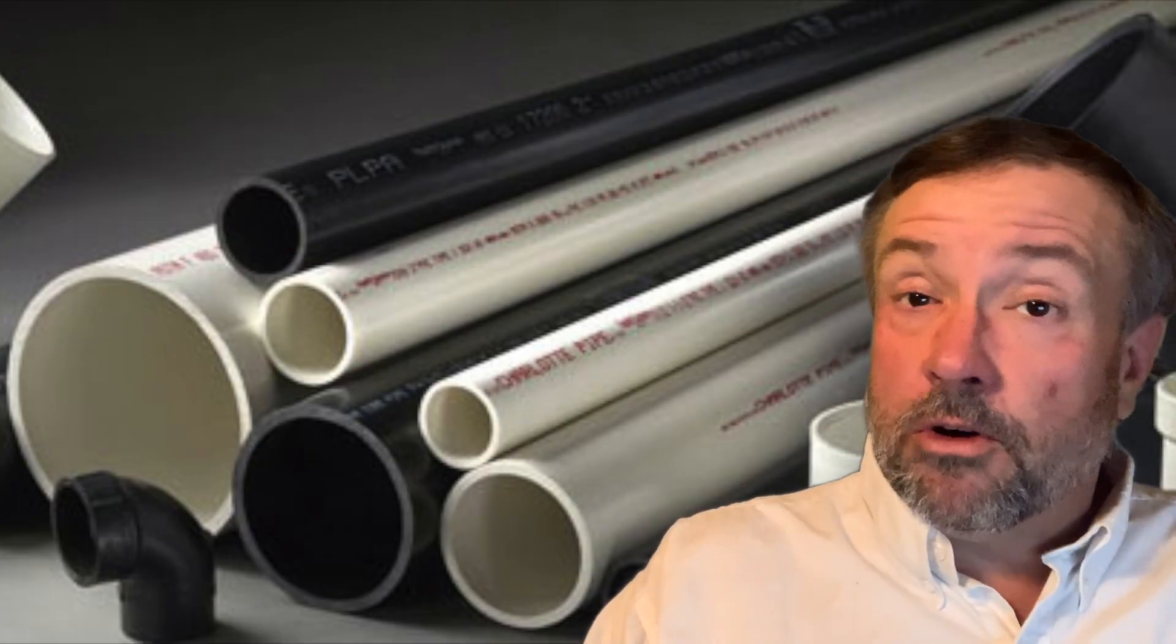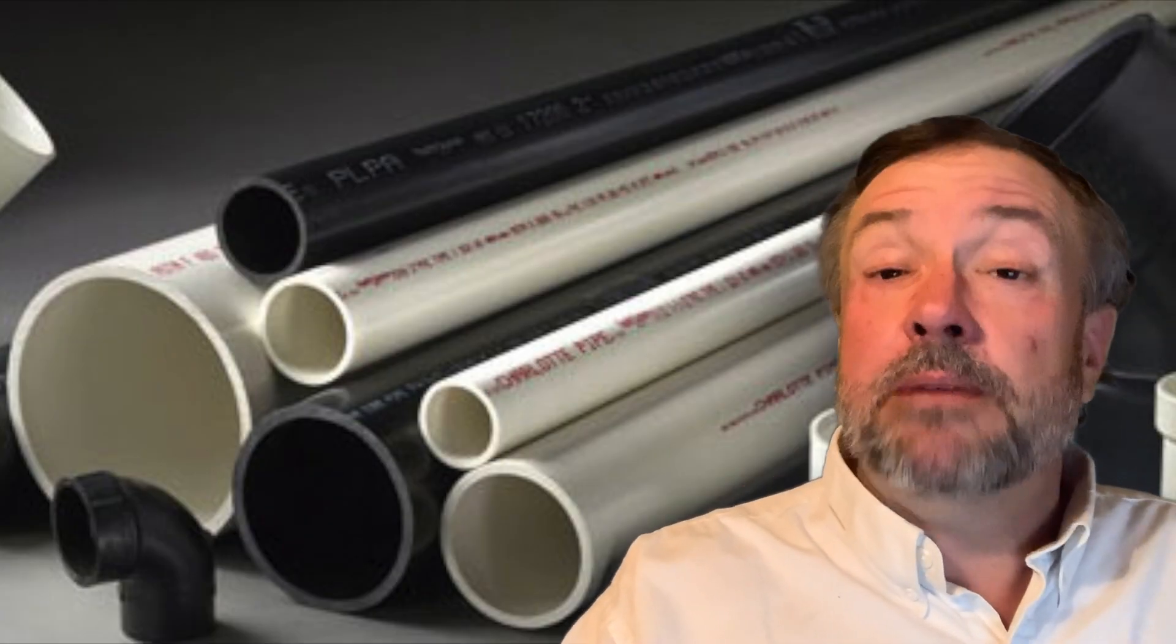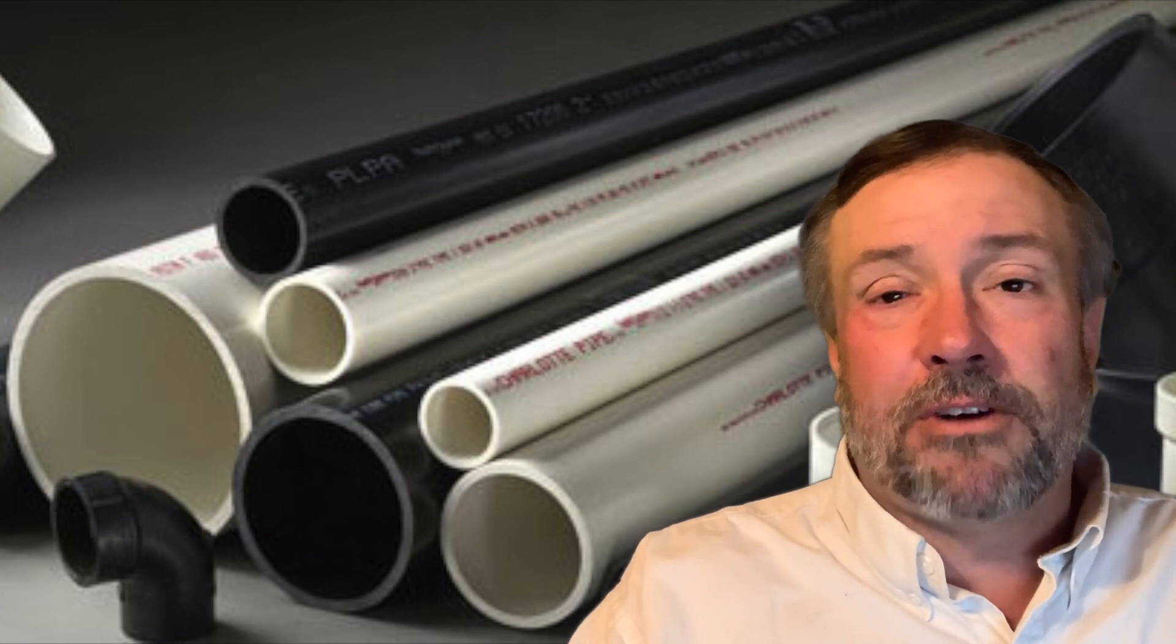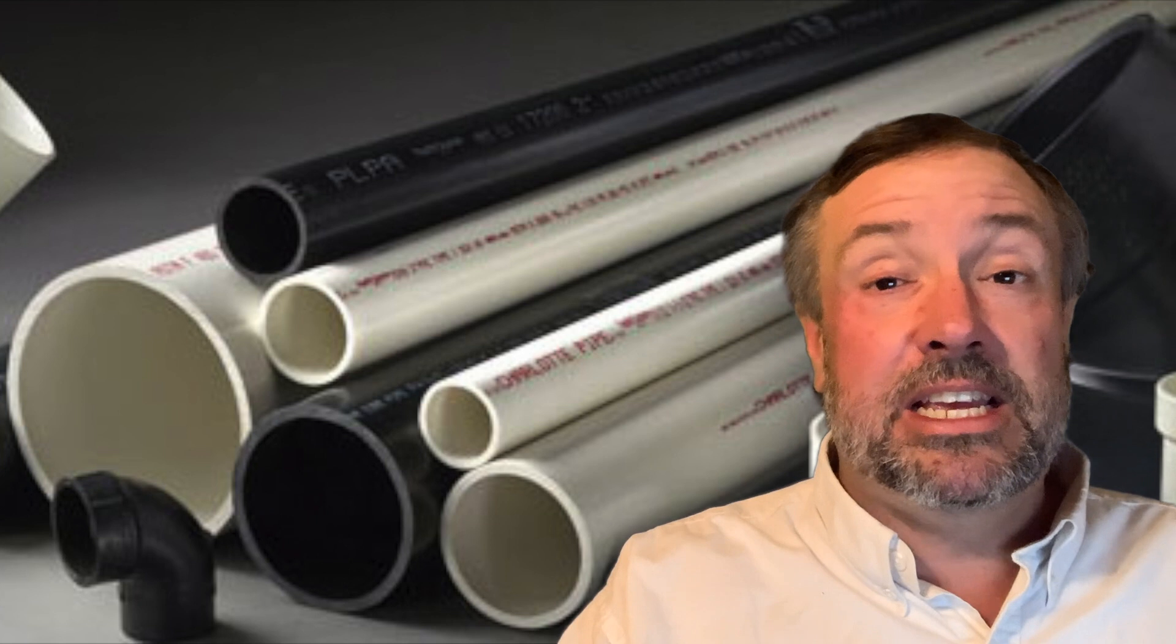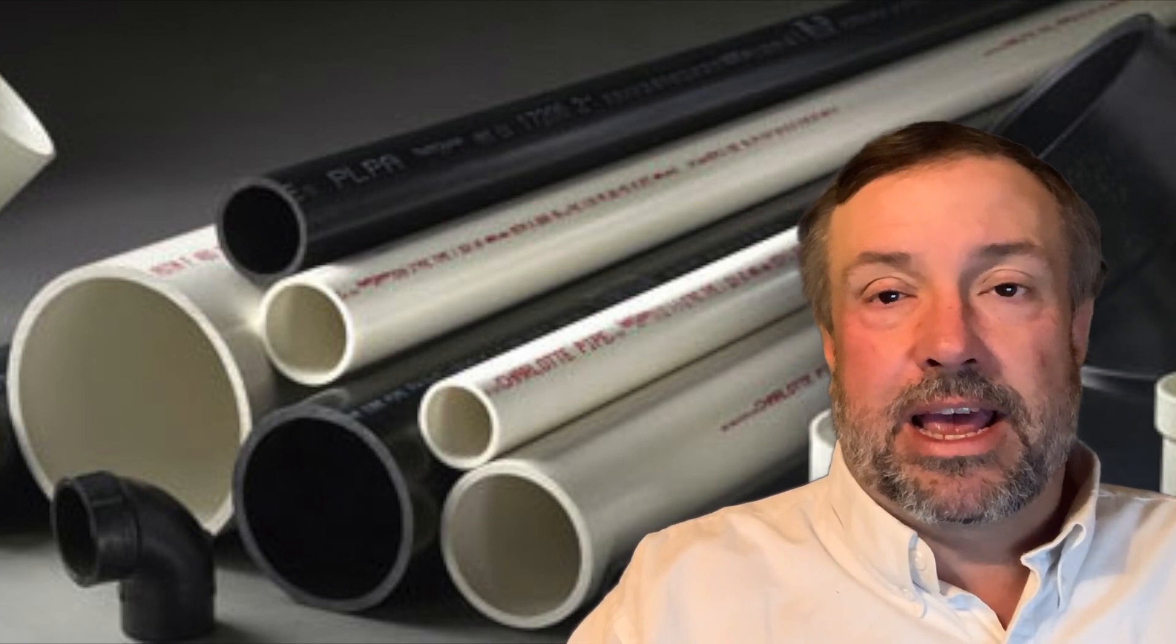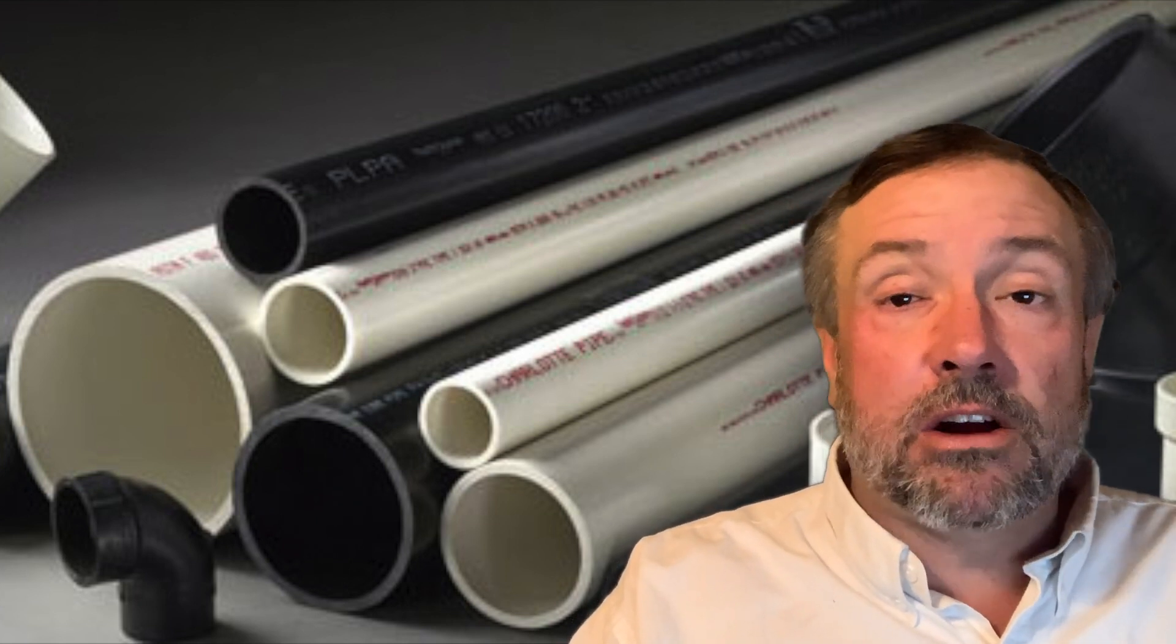Another option similar to ABS is PVC piping. From a contractor standpoint, the main difference between ABS and PVC is price. ABS is generally better. It's thicker. It's stronger. PVC schedule 40 is thin. You may be able to get schedule 80, which has a little more strength, but then your price is going through the roof. That being said, it also comes in all sizes.